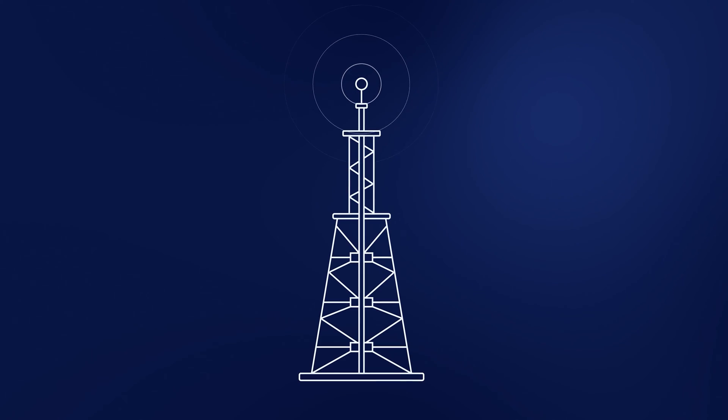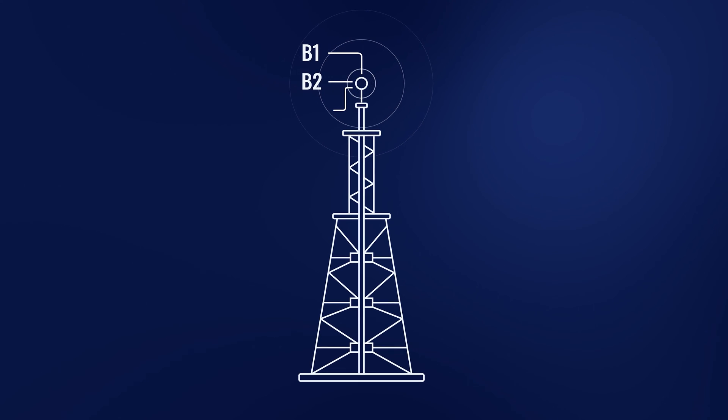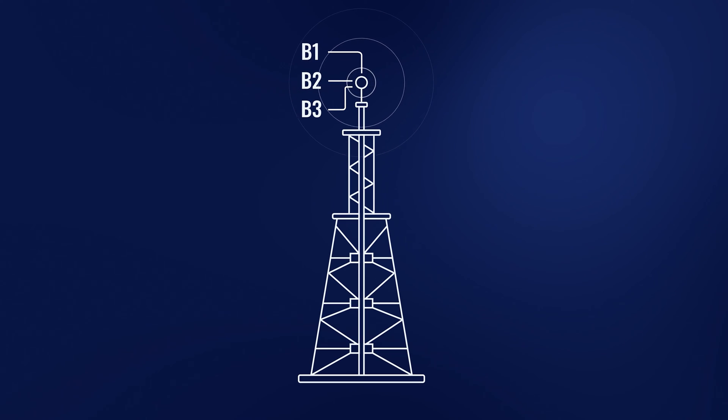While carrier aggregation can be used for multiple networking technologies, it's most commonly associated with mobile networks like 4G and 5G. Imagine there's a cell tower that supports three band frequencies — B1, B2, and B3 — meaning that the cell tower can accept connections coming from these three frequencies.